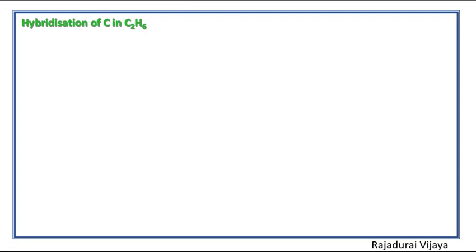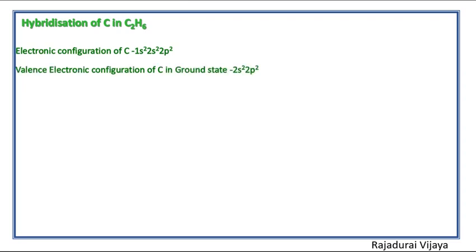Now we look at the electronic configuration of carbon. To find out the hybridization, we have to consider the valence electronic configuration in the ground state. The electronic configuration of carbon is 2s2 2p2, arranged as shown here.